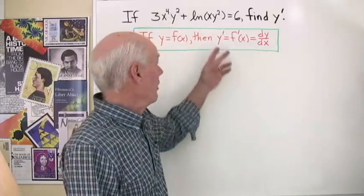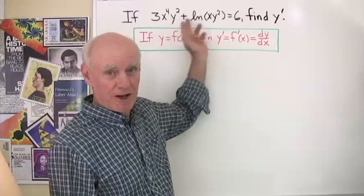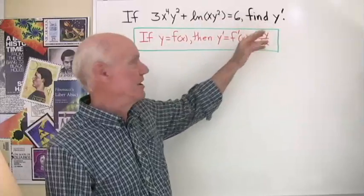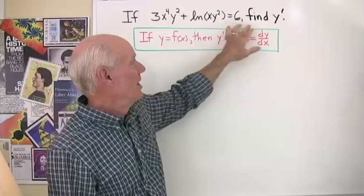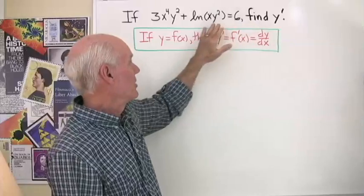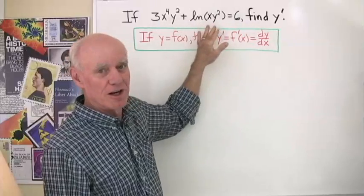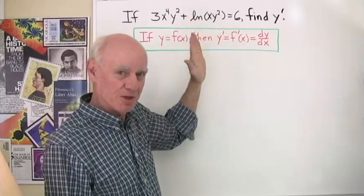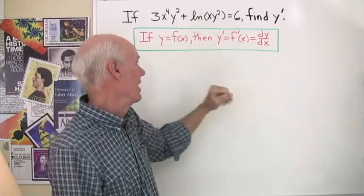Here we have a function that involves logarithms, and we want to find the derivative of y with respect to x. Notice that y and x are given in terms of each other implicitly, not explicitly — y in terms of x.